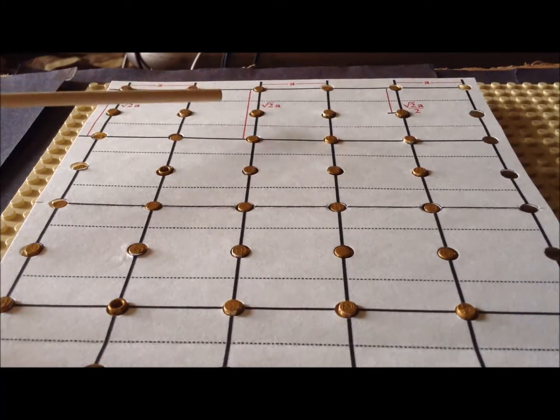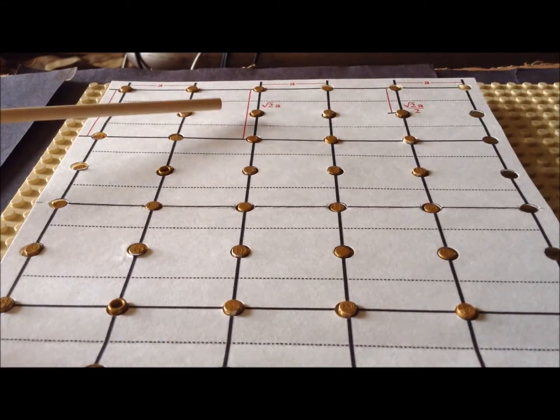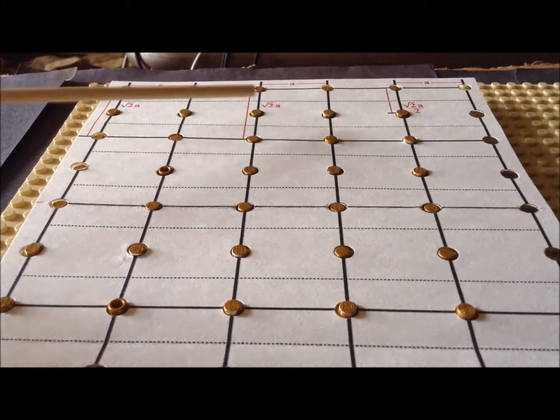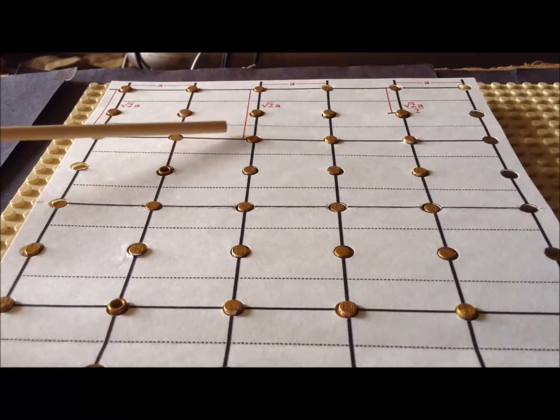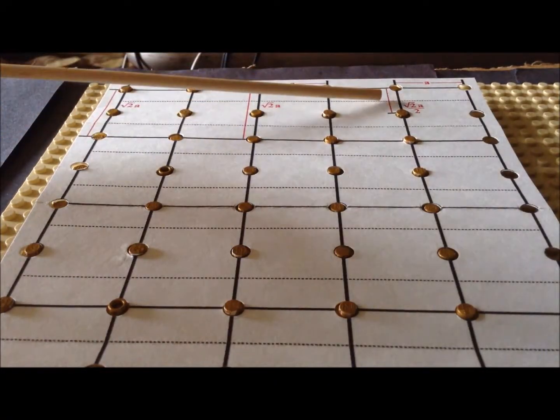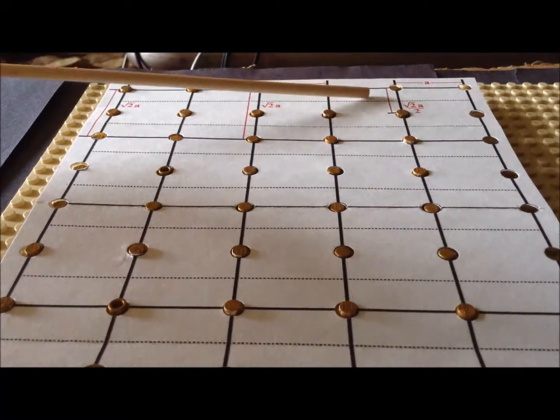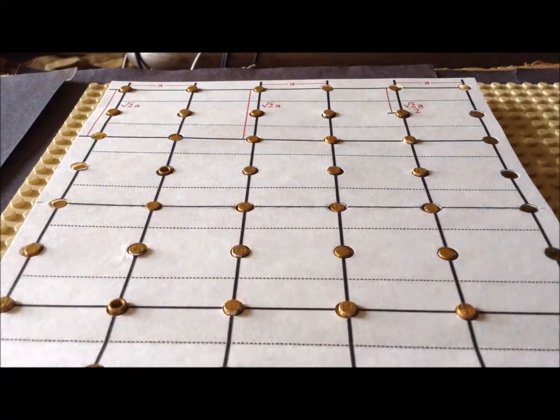And up here we have, for the figure, the various dimensions clearly labeled in red. This one and this one, we see the distance for the big rectangle, which is the square root of two times a. And then over here we see that between the atoms on the short side of the rectangle, it's the square root of two over two times a.